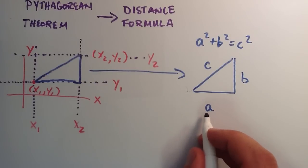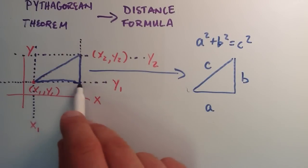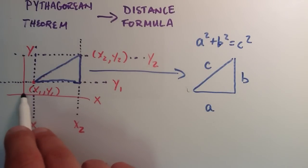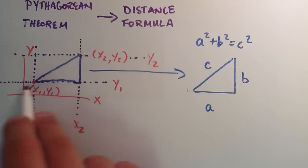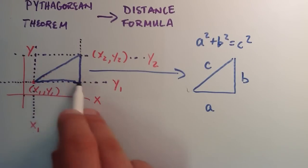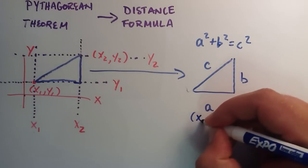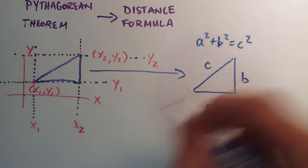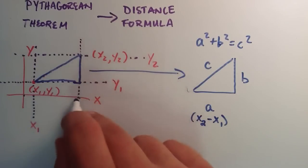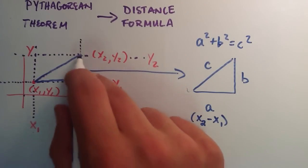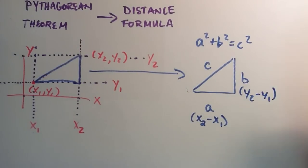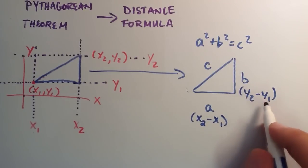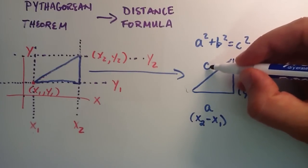We want to rename a and b first. The side a represents the horizontal distance. The distance in the x-direction is x2, but we subtract the piece equal to x1, so a equals x2 minus x1. The side b represents the vertical distance: it's y2 minus the piece y1, so b equals y2 minus y1. And c is what we're solving for — that's our distance.